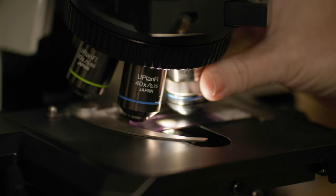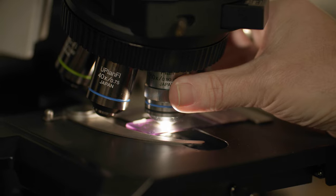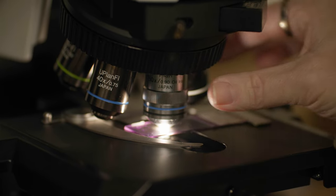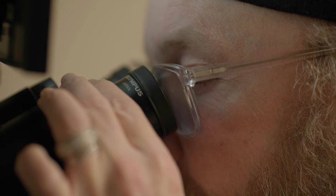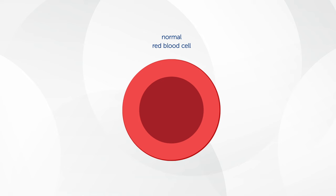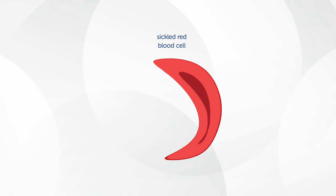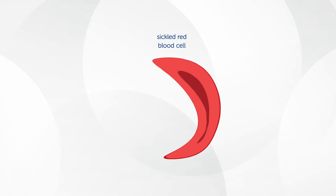Sickle cell disease is a genetic disease in which the normal hemoglobin that's in the red blood cell — the function of which is to carry oxygen — has a protein mutation that makes the red cell turn into a sickle shape. And when that happens, it causes the oxygen not to be delivered to vital organs.